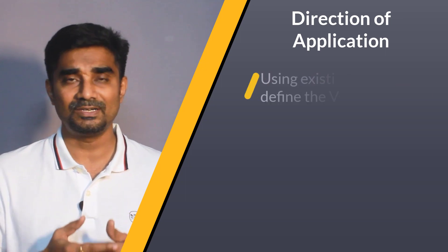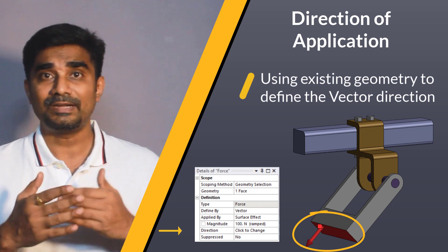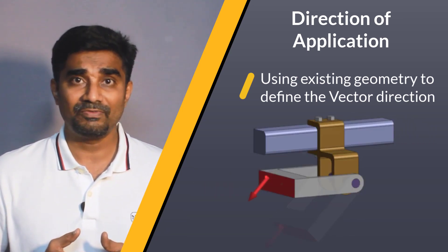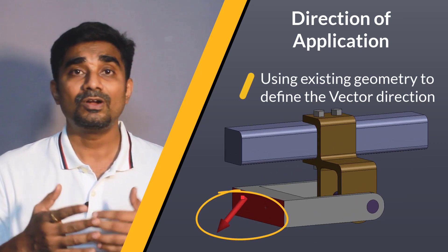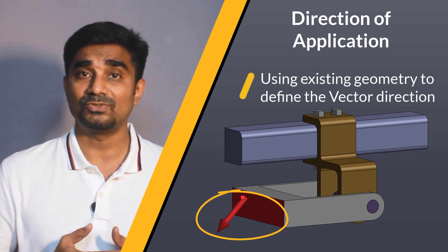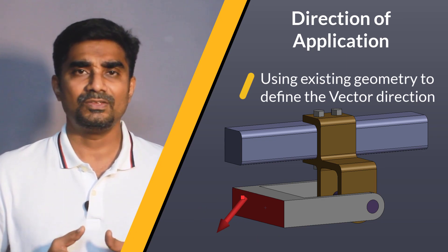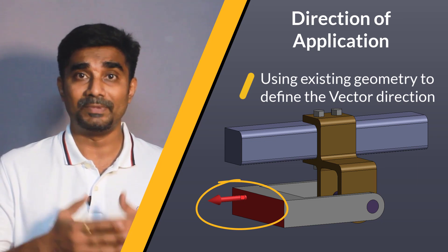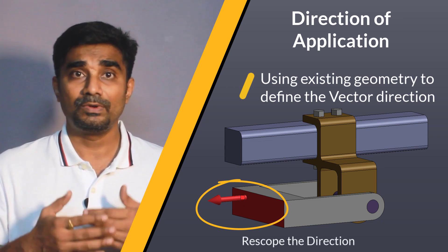We also have an option to use existing geometry to define the vector direction for both types of loads. But it is important to note that if the reference geometry is modified, the loading direction defined before the modification will not be updated — it does not create any associative loading direction with respect to the geometry. This feature is for the user's convenience only. So if we want the loading direction to be updated as per the modified reference geometry, we will have to re-scope it appropriately.